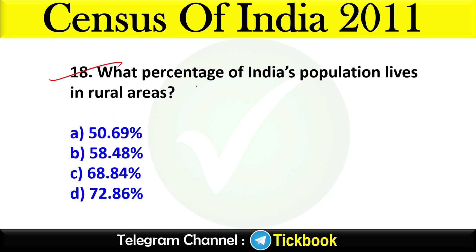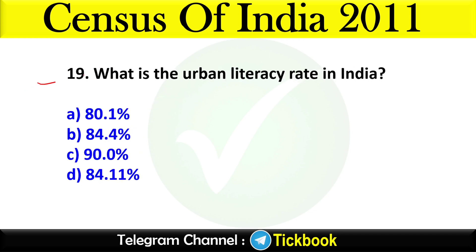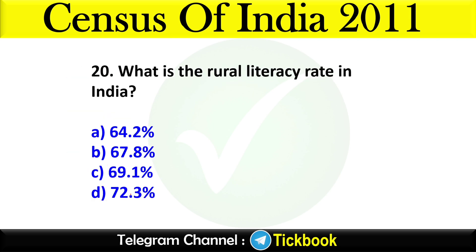Question eighteen: What percentage of India's population lives in rural areas? Option number C: 68.84 percent. Question nineteen: What is the urban literacy rate in India? Option number D: 84.11 percent. Question twenty: What is the rural literacy rate in India? Option number B: 67.8 percent.